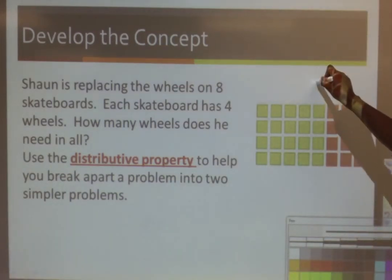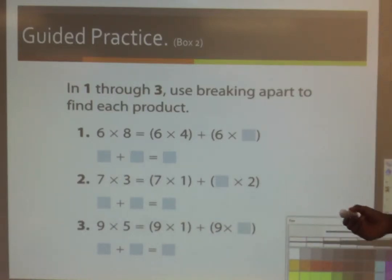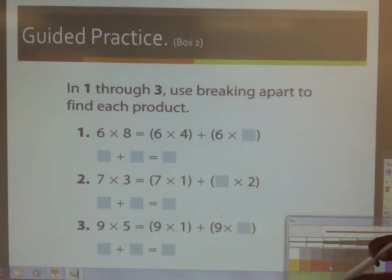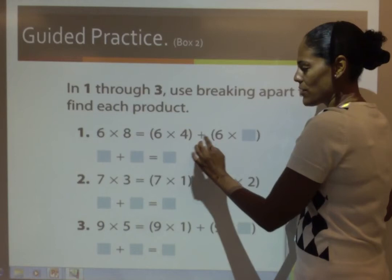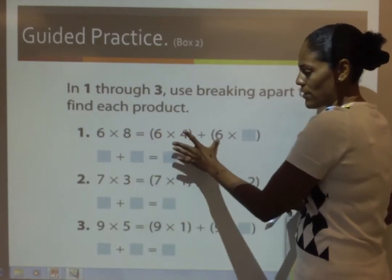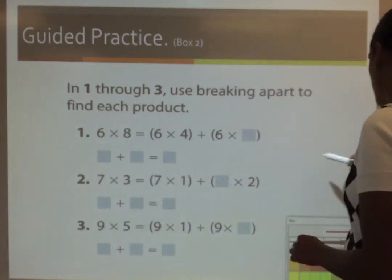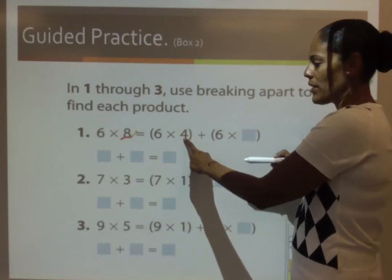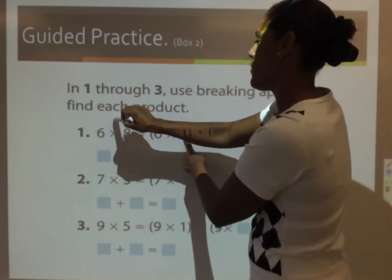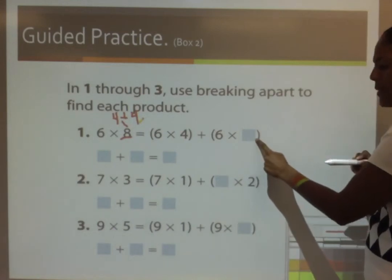So, let's look at some problems that are already broken apart. The first thing we need to do here is that you need to think about where these are broken apart at. So, when I look at 6 times 8, I see that there's a 6 in both of these. So, I know that they broke apart the 8. If I see a 4 here, I know that 8 is 4 plus 4. So, that means there has to be a 4 over here.